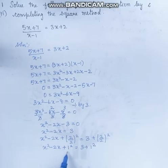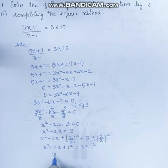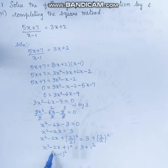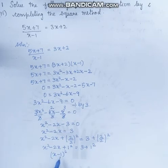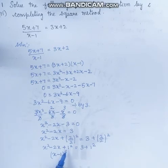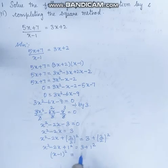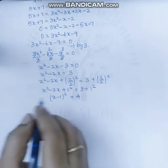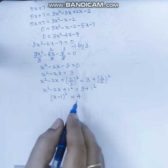Now this left-hand side can be recognized as a perfect square. Using the identity a square minus 2ab plus b square equals (a minus b) whole square, where a is x and b is 1, we get x minus 1 whole square is equal to 3 plus 1, which equals 4. So, x minus 1 whole square is equal to 4.